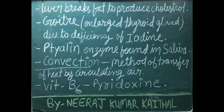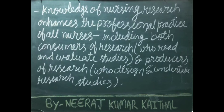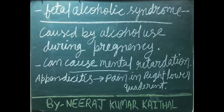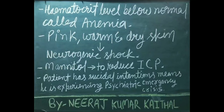Vitamin B6 is also known as pyridoxine. Knowledge of nursing research enhances the professional practice of all nurses, including both consumers of research — those who read and evaluate studies — and producers of research — those who design and undertake research studies. Fetal alcohol syndrome, caused by alcohol use during pregnancy, can cause mental retardation. In appendicitis, pain is felt in the right lower quadrant. Hematocrit level below normal is called anemia. In neurogenic shock, skin becomes pink, warm, and dry.